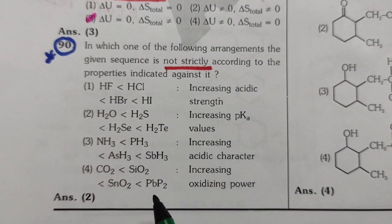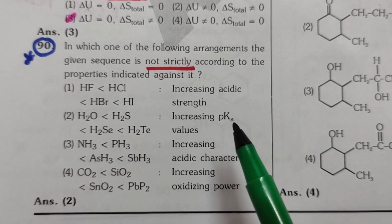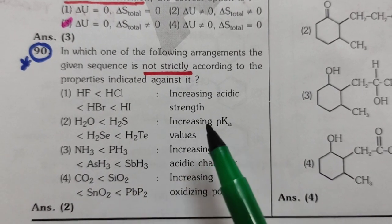So here, in these four, what is the incorrect match? Second one is the incorrect match, because here they give increasing pKa. Actually, this is increasing acidic strength or increasing Ka. Clear.